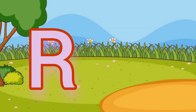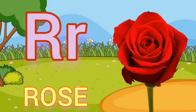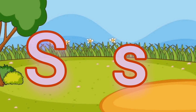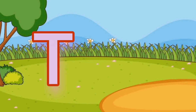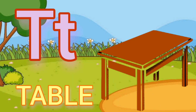Capital R, small r. R for rose. Capital S, small s. S for sun. Capital T, small t. T for table.